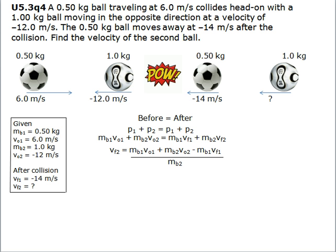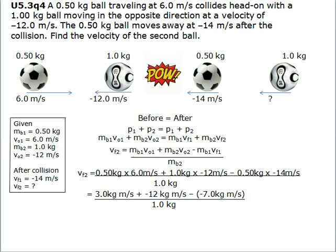The rearranged equation is: mass times velocity of the first ball plus mass times velocity of the second ball, minus the mass times velocity of the first ball after the collision, all over the mass of the second ball. Plugging in the numbers: 0.5 kilograms times 6 meters per second, plus 1 kilogram times negative 12 meters per second, minus 0.5 kilograms times negative 14 meters per second, all over 1 kilogram.